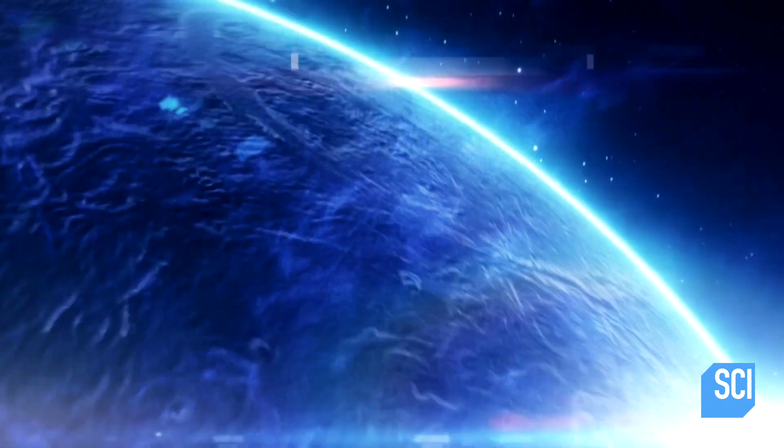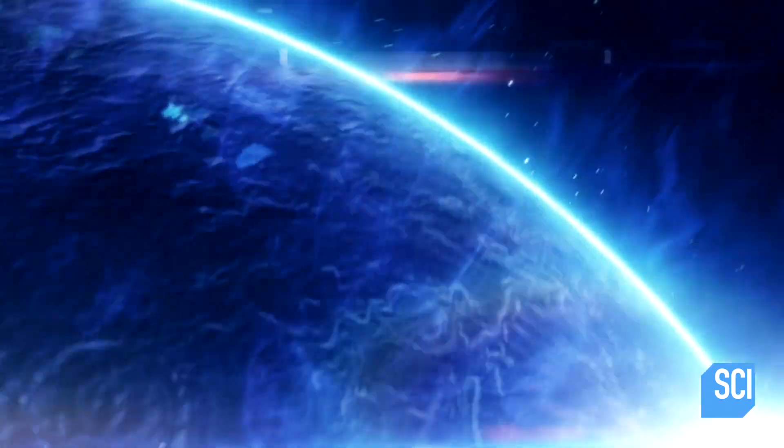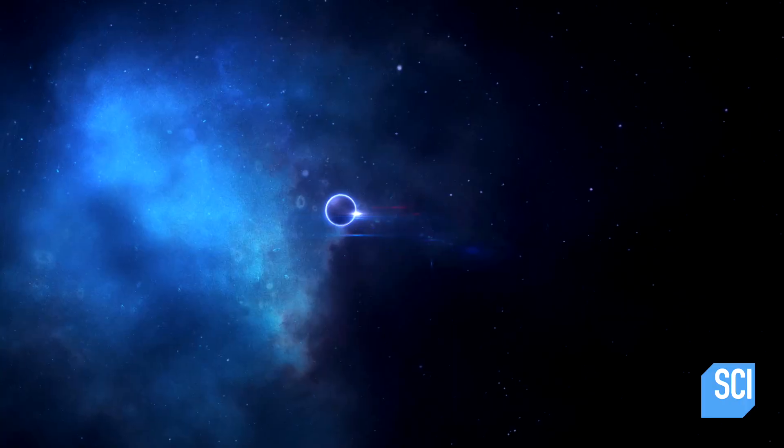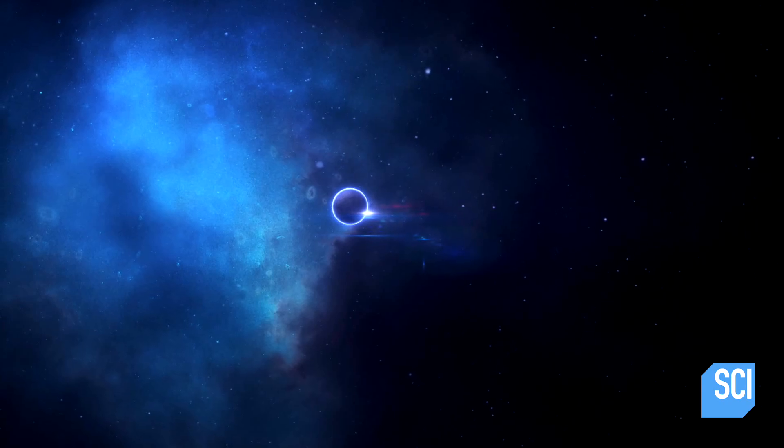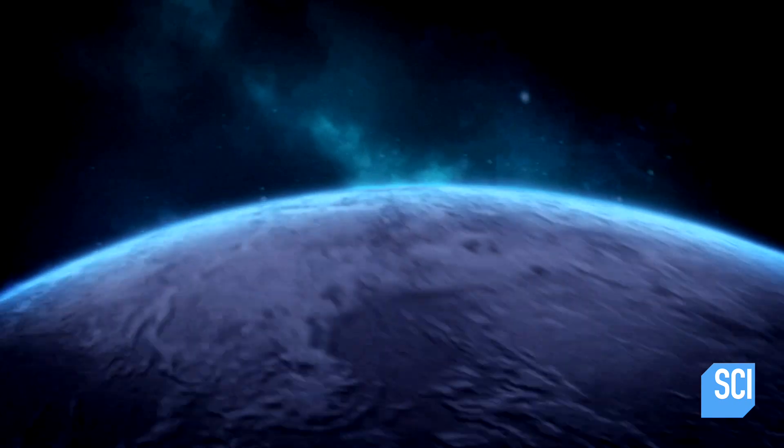A neutron star is the densest body we know of in astrophysics, besides a black hole. If you somehow had a little stone-sized piece of neutron star matter, it would weigh 100 million metric tons and would immediately fall right through your hand.